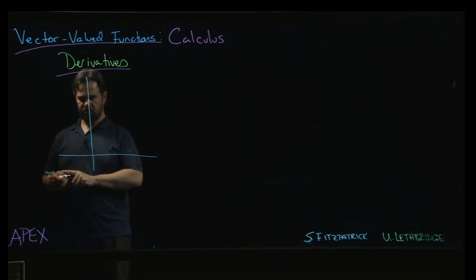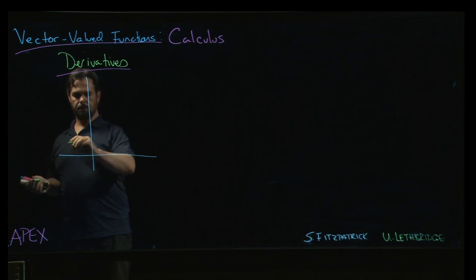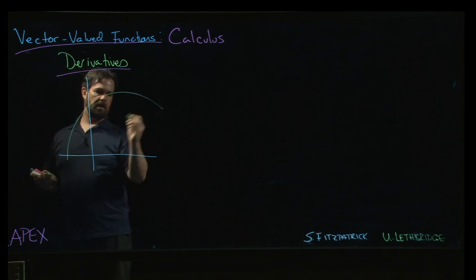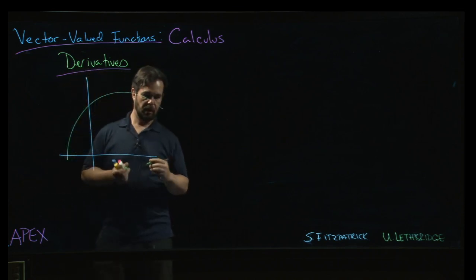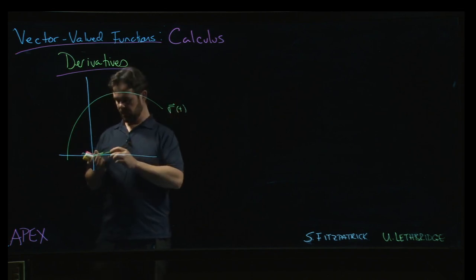I'll draw things in the plane just to simplify, or even just leave out the coordinate system maybe. So imagine I've got a curve and it's given by some vector valued function. Here's the graph of my vector valued function.